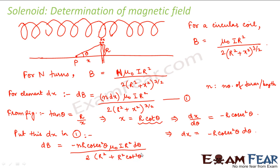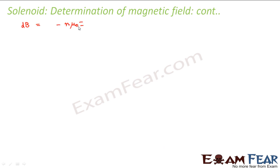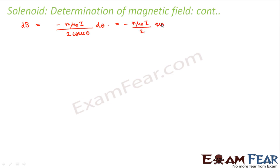Substituting, dB = −n·R·cosec²θ · μ₀iR² dθ divided by 2 into (R² + R²·cot²θ) to the power 3/2. This simplifies — the R³ terms cancel — and we are left with dB = −(nμ₀i/2)·sin θ dθ.